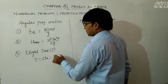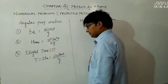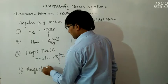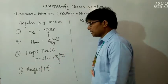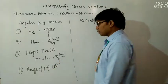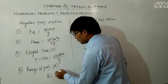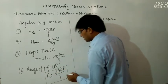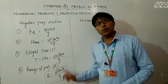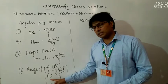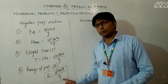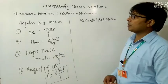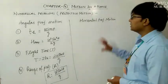Next we derived the formula for flight time, denoted by capital T. The flight time T is twice of T_H, the time taken to reach maximum height, giving T = 2u·sinθ / g. One more formula derived was the range of the projectile — the maximum horizontal distance covered — denoted R, with formula R = u²·sin2θ / g. You must also remember that the condition for maximum range is θ = 45°, so maximum range becomes u²/g since sin90° = 1.